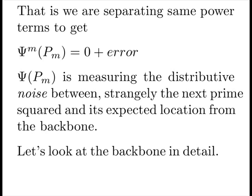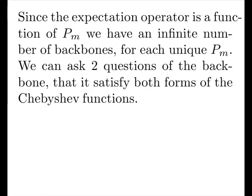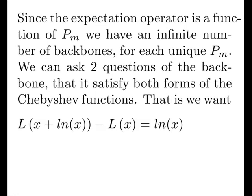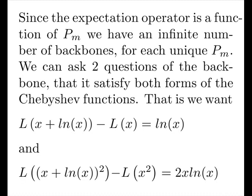Let's look at the backbone in greater detail. Since the expectation operator is a function of the current prime, we have an infinite number of backbones for each unique current prime. We now ask two questions of the backbone that has satisfied both forms of Chebyshev functions. That is, we want that L at x plus log of x subtract L of x is equal to log of x, that's the first form. And, the second form is returning our semi-linear form between prime squares.